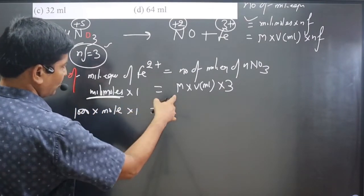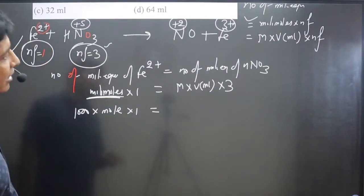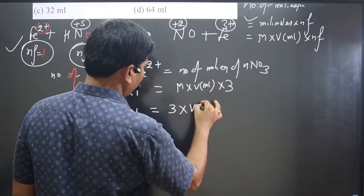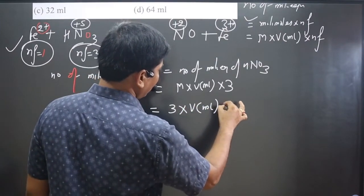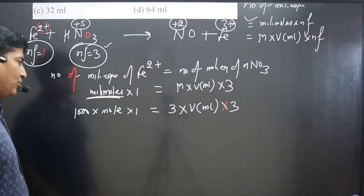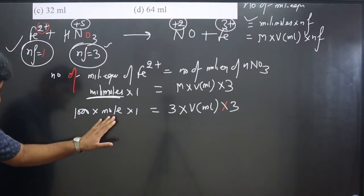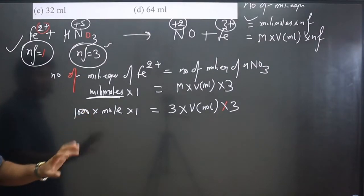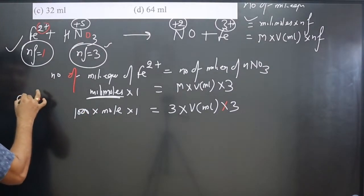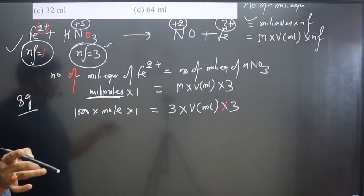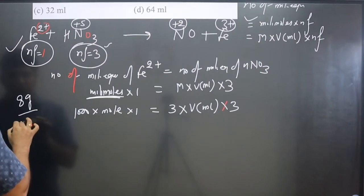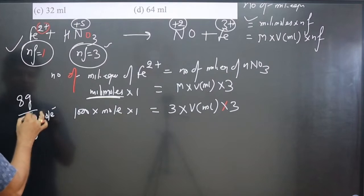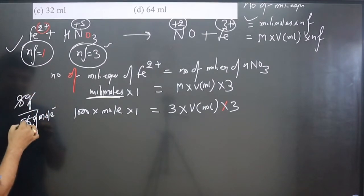This equals molarity of HNO₃, which is given as 3 molar in the equation, and volume is to be calculated in mL, and we have n-factor value 3. Keep in mind, mol equals mass by molar mass. Mass of Fe²⁺ is already given, that is 8 gram. And atomic mass of Fe²⁺ will be 56 gram per mol. So gram cancels and it is 8 divided by 56.